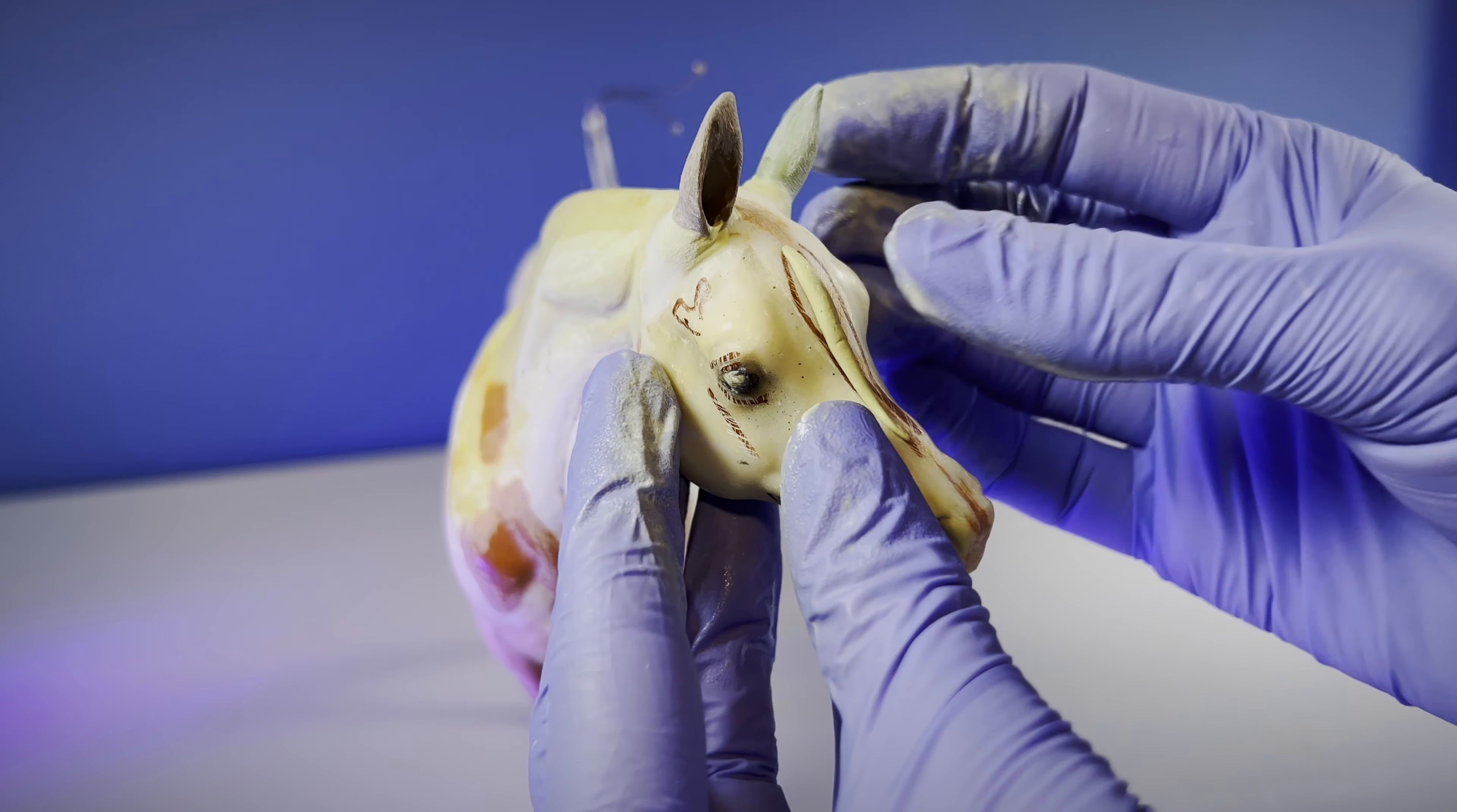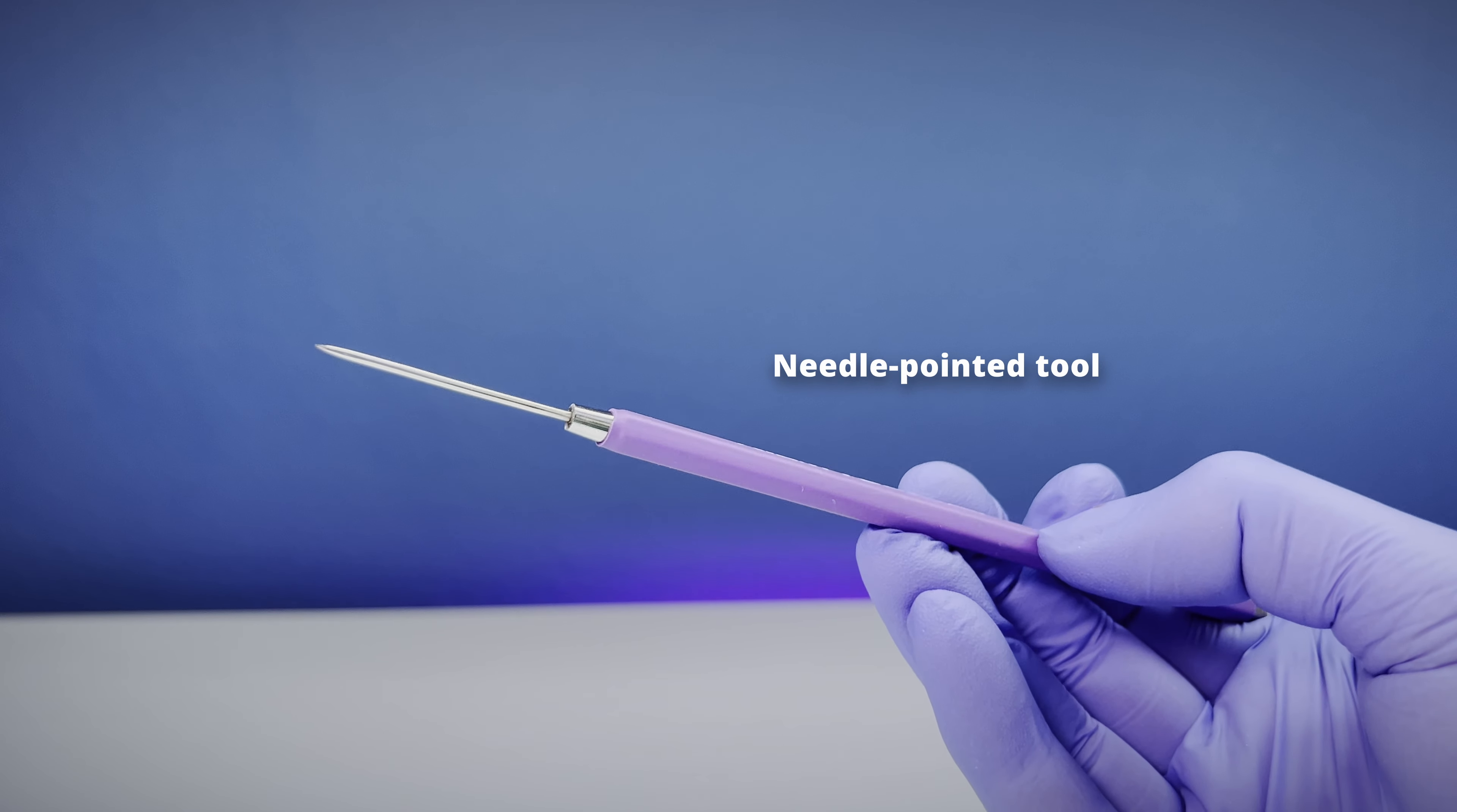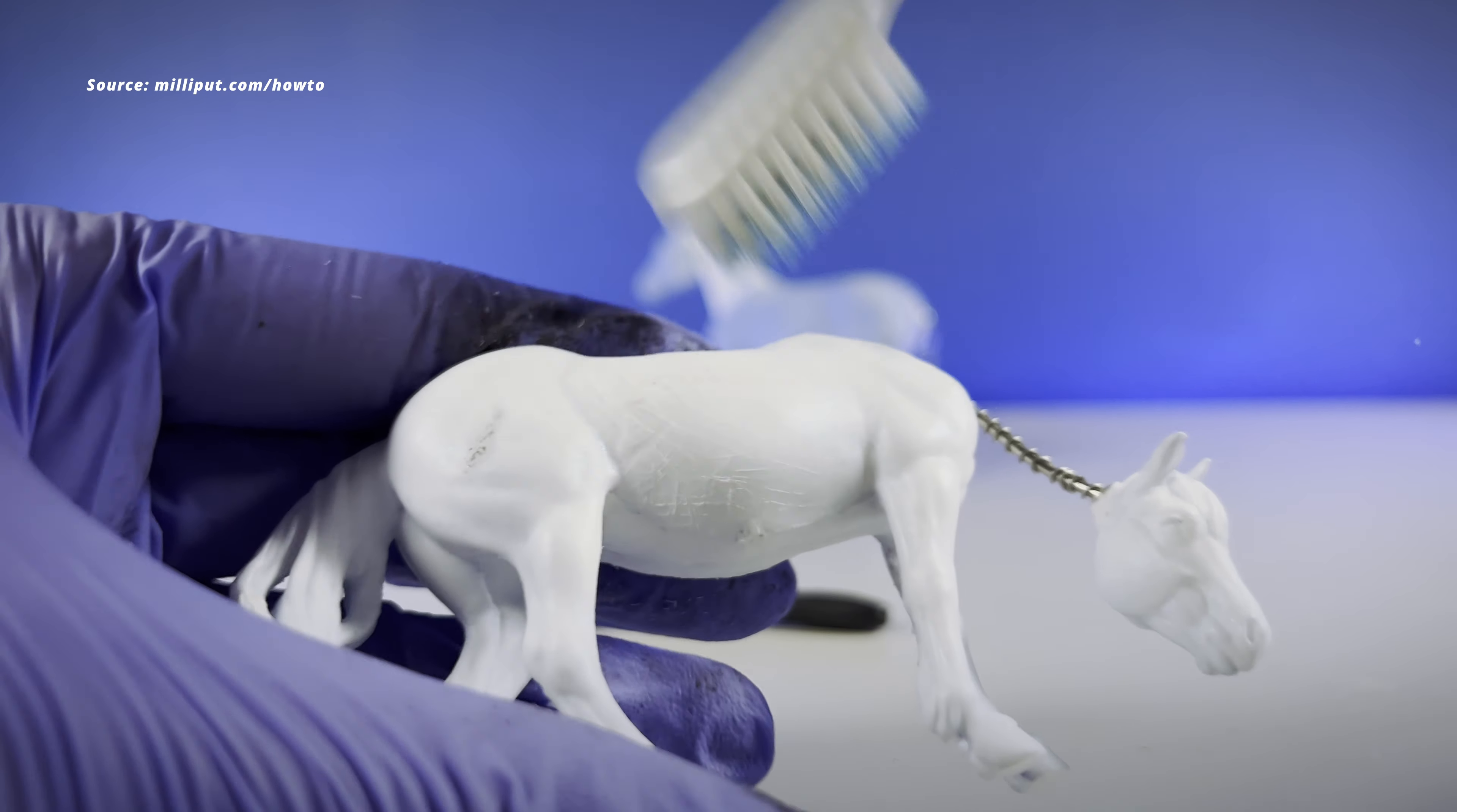I use a combination of sandpaper, sanding sponges, needle files, or a needle pointed tool to get all kinds of rough surfacing, then I clean and dry it before adding the putty. Cleaning removes any loose particles or oils that might prevent adhesion.